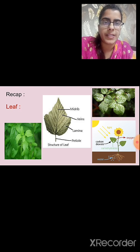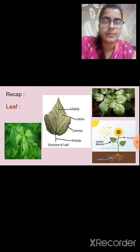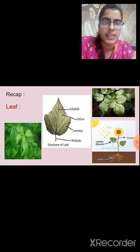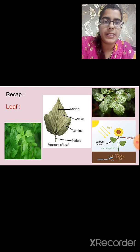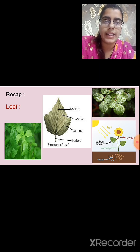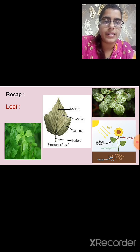Then we studied about the photosynthesis process. In this process, leaves prepare their own food in the presence of sunlight and the green pigment in the leaf known as chlorophyll. The leaves use water and carbon dioxide while they release oxygen into the air. The food prepared by the leaf is stored in the form of starch.